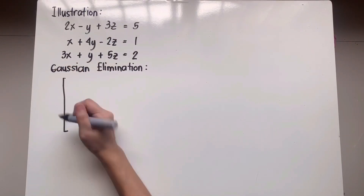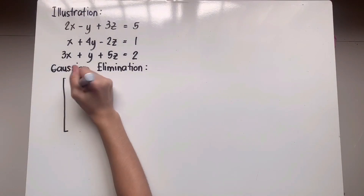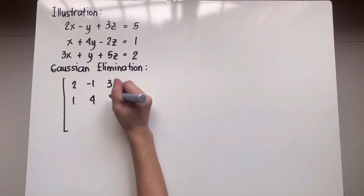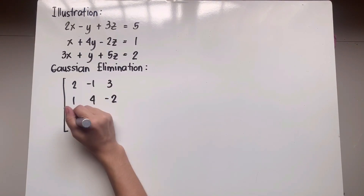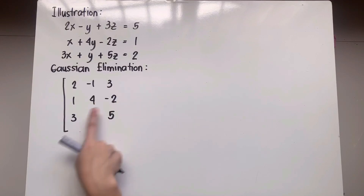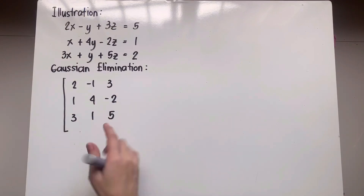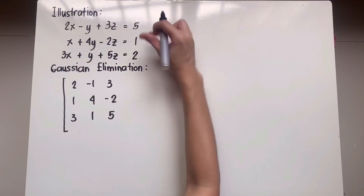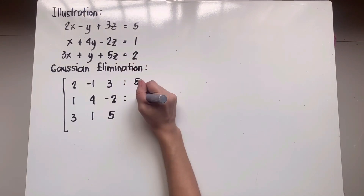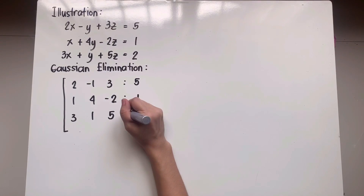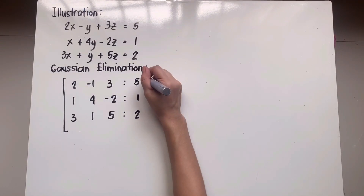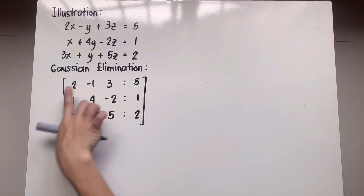We have our coefficient matrix as 2, negative 1, 3, 1, 4, negative 2, and 3, 1, 5. After every row in a coefficient matrix, you'll separate the constant matrix with a colon — 5 for the first row, colon 1 for the second row, and colon 2 for the third row, which represents your third equation. This is what we know as our augmented matrix.